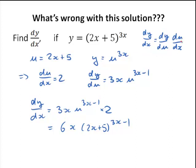The general approach is okay. u equal to 2x plus 5. Yes, that's okay. y is equal to u to the power of 3x. That would also be okay. du/dx is 2.